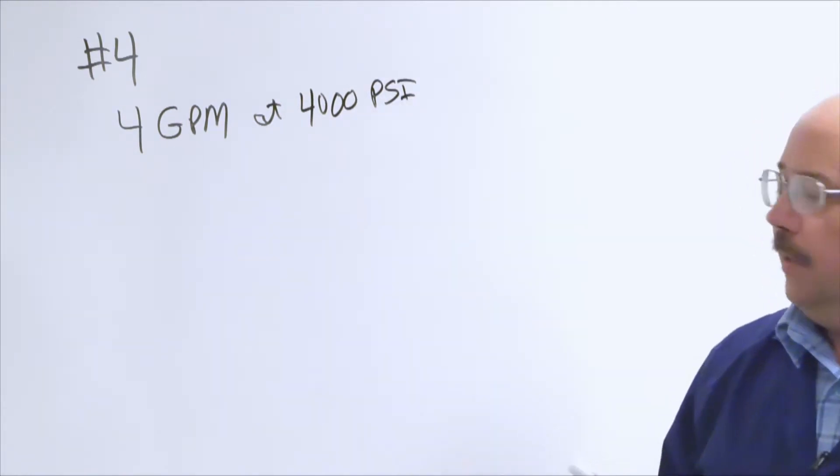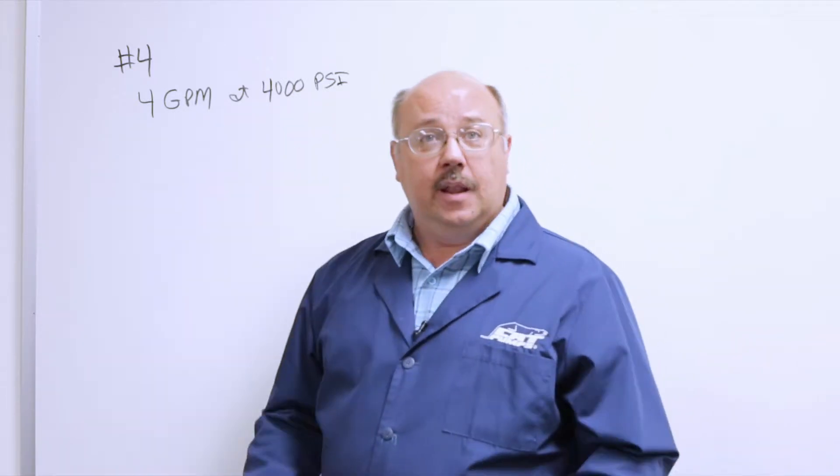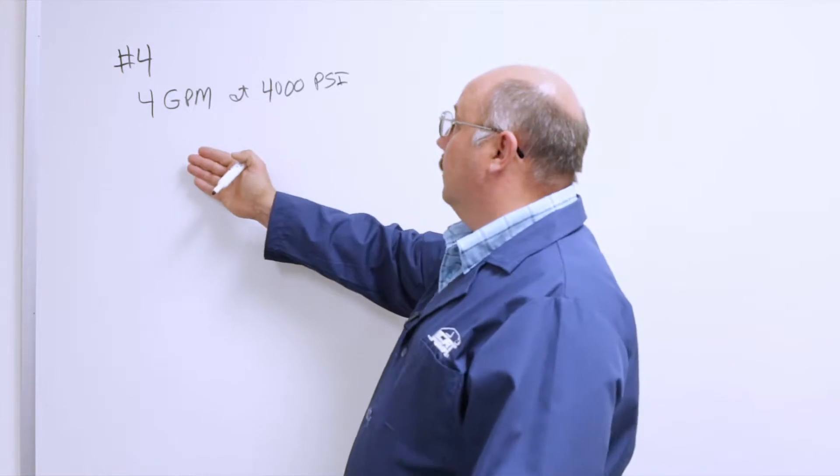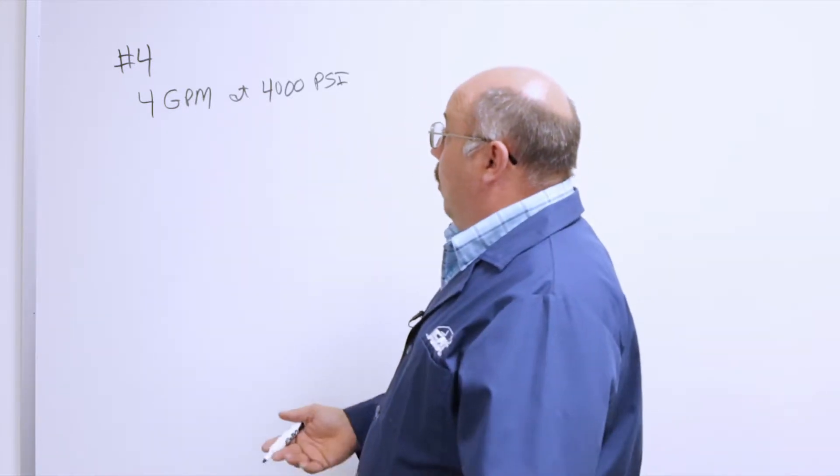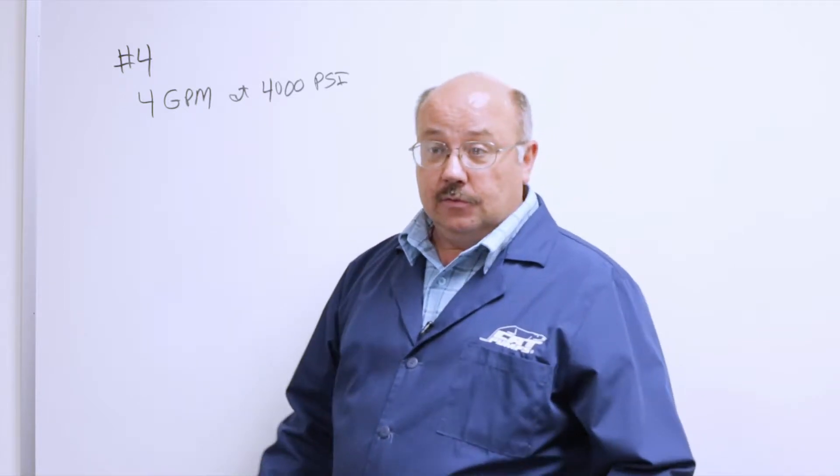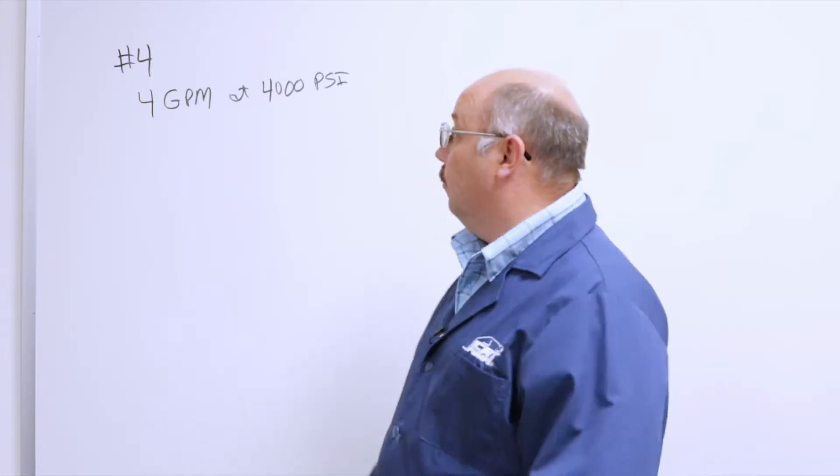So if I had a number three nozzle, it would be three gallons at 4,000. A number two nozzle would be two gallons at 4,000 psi. Now, we don't always have 4,000 psi on the nozzle. So we have to be able to calculate what flow and pressure we'll have at different rates.